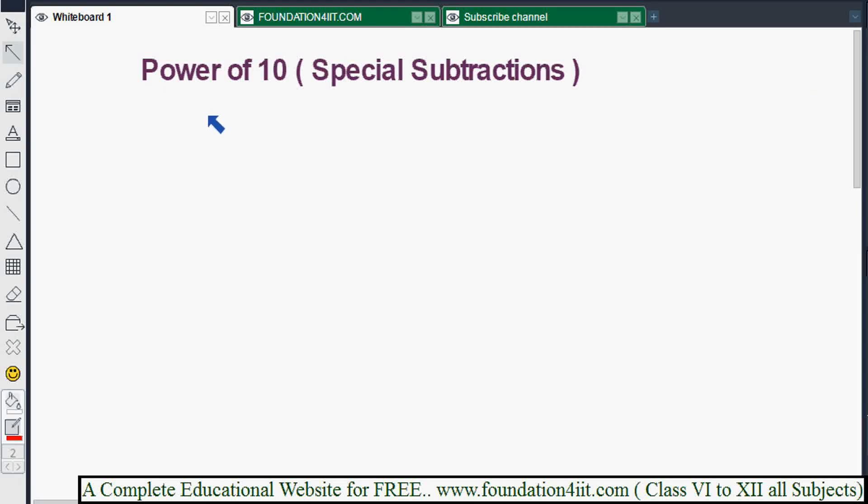Welcome to the educational channel. Here I will explain subtraction of any number from a power of 10. Power of 10 is like 10 to the power 2 is 100, 10 to the power 3 is 1000, and 10 to the power 6 means 1 followed by 6 zeros.